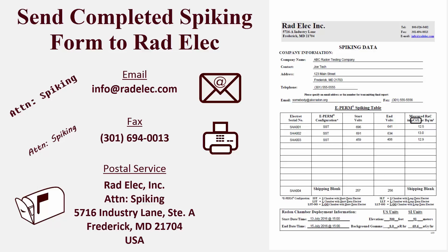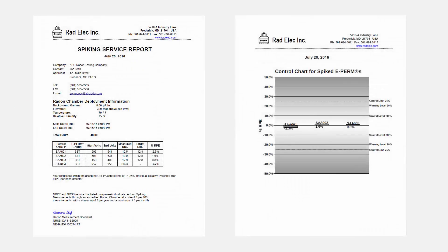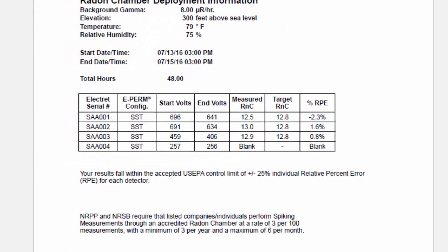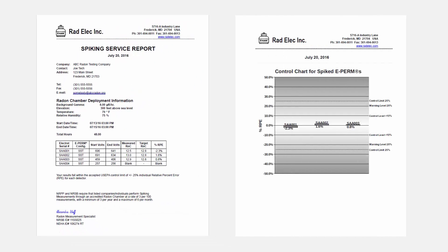This type of spiking service is called blind spiking, which means that you will not find out the known radon concentration of our chamber until after you send us the completed spiking service form. Once you do, we'll compare your results with the target radon concentration and send you a finalized two-page spiking service report. On the first page, you'll notice the target radon concentration in the second column from the right, and the relative percent error in the rightmost column.